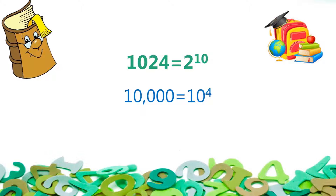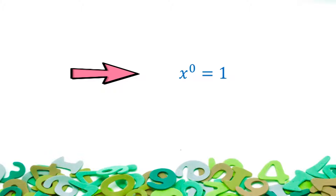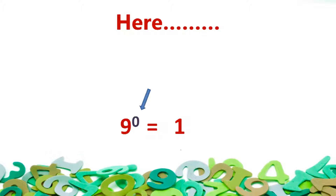Now let us discuss some laws of indices. Law 1 states: any number except 0 where the index is 0 is always equal to 1. If x is any base, then Law 1 states that x raised to power 0 is equal to 1. For example, 9 raised to power 0 is equal to 1. Here, 0 is the index value.